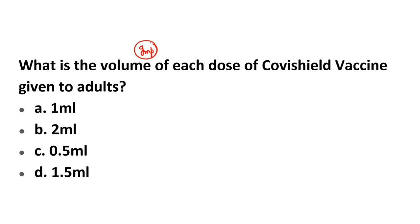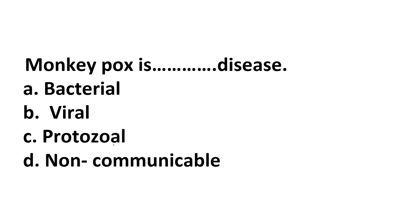Since COVID came in 2020 — how many ml dose of Covishield vaccine is given to adults? The options are 1 ml, 2 ml, 0.5 ml, and 1.5 ml. The correct answer is 0.5 ml — Covishield vaccine is injected in a 0.5 ml dose to adults. C is the correct answer.